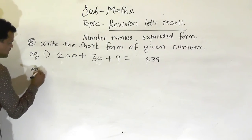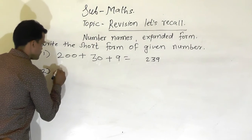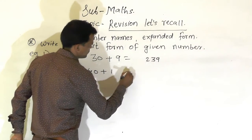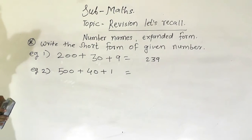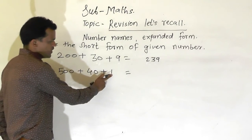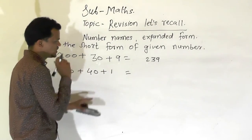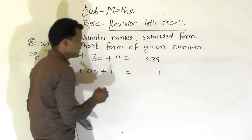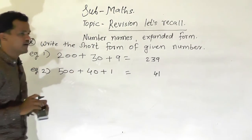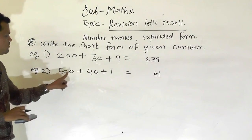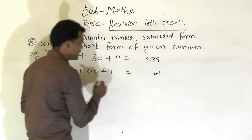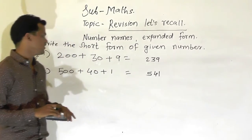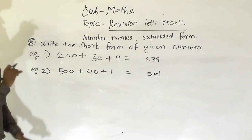One more example: 500 plus 40 plus 1. What will be the short form of this number? 1 is a single digit number, so it goes at the ones place. 40 means 4 tens, so it goes at the tens place. And 500 means 5 hundreds, so 5 goes at the hundreds place. So which number is formed? 541. This type of example will also come in the exam.